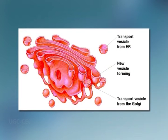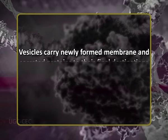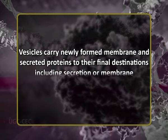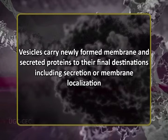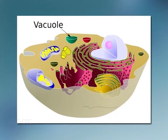The Golgi apparatus is a series of stacked membranes. Vesicles carry materials from the rough endoplasmic reticulum to the Golgi apparatus, where proteins are processed to a mature form. Vesicles then carry newly formed membranes and secreted proteins to their final destinations, including secretion or membrane localization. Vacuoles are membrane-surrounded bags that contain water and storage material in plants.